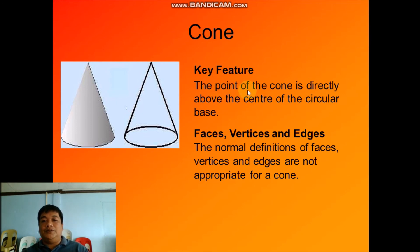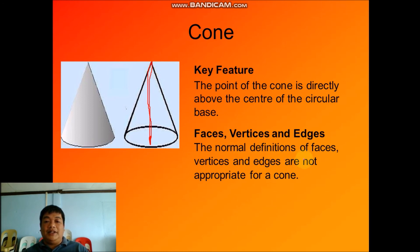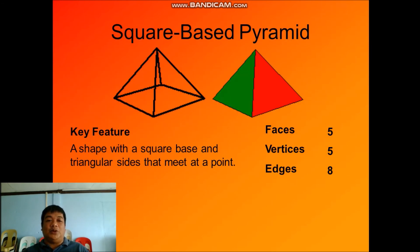The key feature of a cone is that its point is directly above the center of its circular base. The center of the circle of the cone is directly below the tip of the cone. The normal definitions of faces, vertices, and edges are not appropriate for a cone, so there are no vertices, faces, or edges for a cone — but it is still a solid figure.